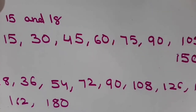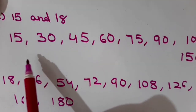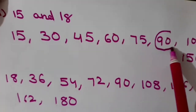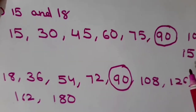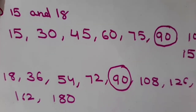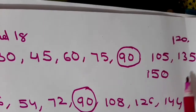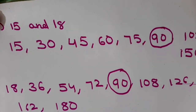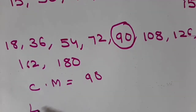Okay, now these are the multiples. Let us find out the common multiple. I can see 90 — 90 is in the multiples of 15 and also in the multiples of 18. So I have got only one common multiple within the first ten multiples, which is 90. So LCM is also 90.